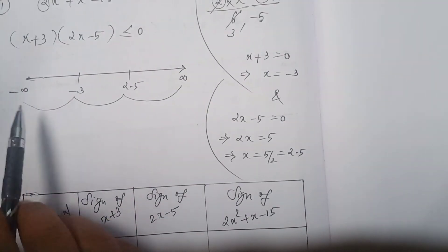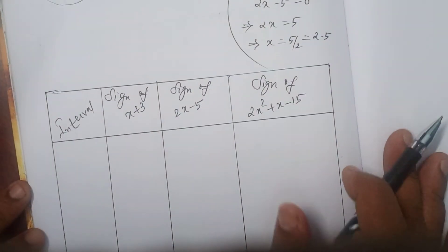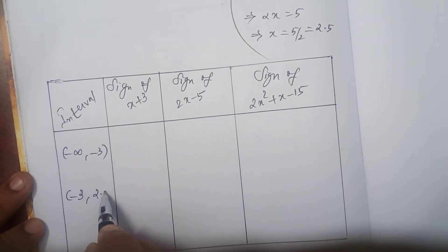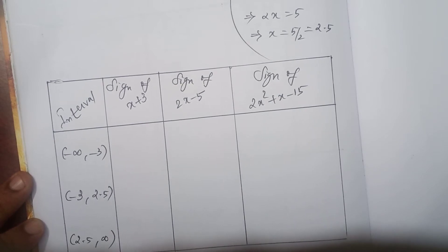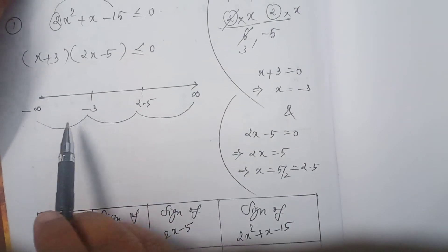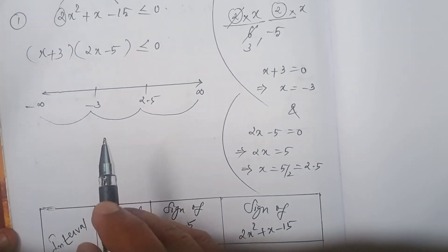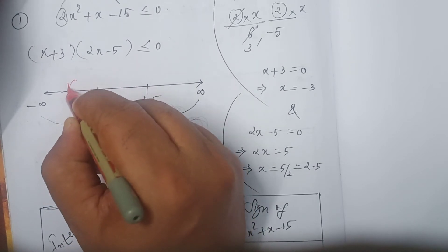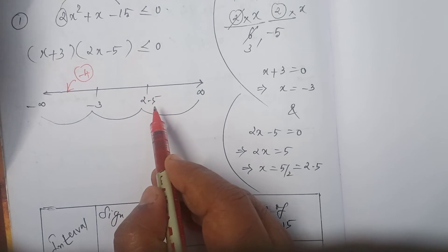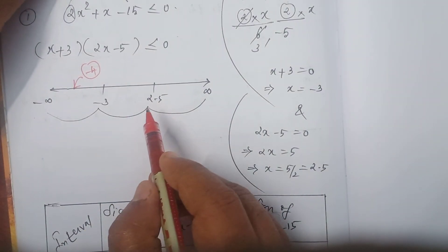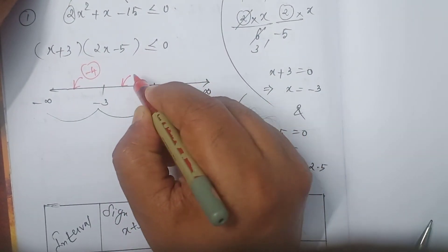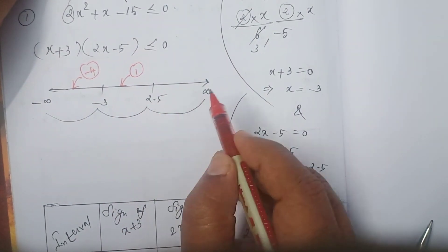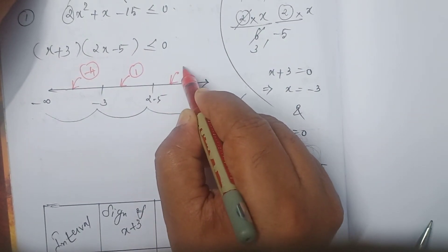The intervals are: first interval minus infinity to minus 3, second interval minus 3 to 2.5, and third interval 2.5 to infinity. In each interval, you consider one test number. I take minus 4 for the first interval. For minus 3 to 2.5, I take 1. For 2.5 to infinity, I consider 3.